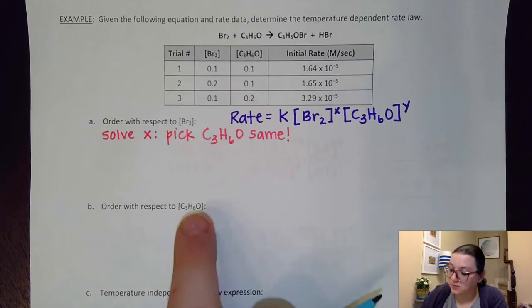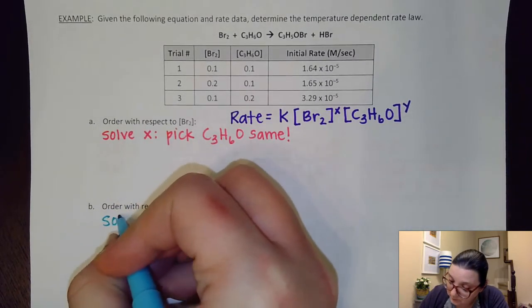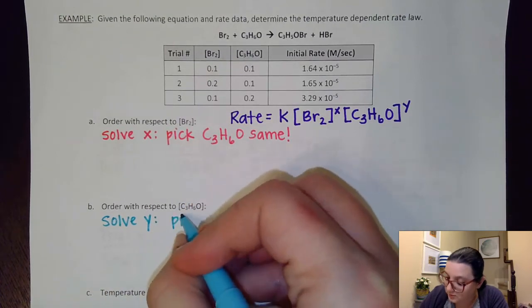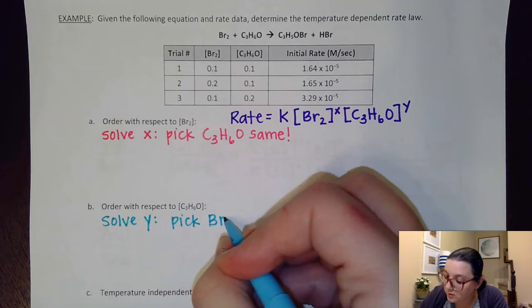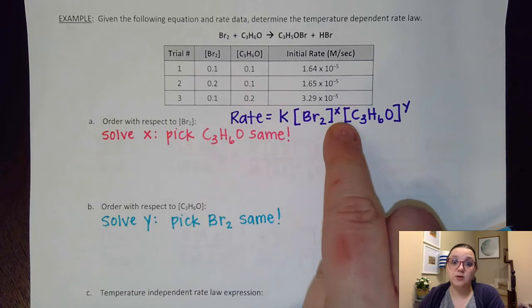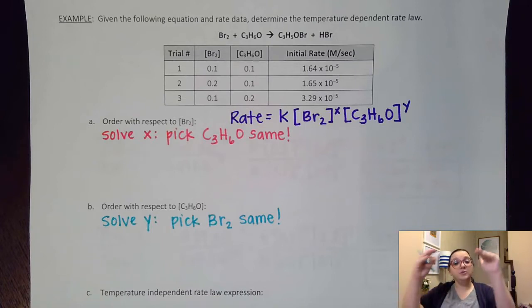For the order with respect to C3H6O, I would want to solve y. And so to solve y, we would want to pick two trials where Br2 stays the same. And so that way, the x could cancel out and I wouldn't have to worry about that as far as my math is concerned. As a reminder, when you pick your two trials and you set up your ratios, we would always want to put the trial with the bigger numbers on the top and the smaller numbers on the bottom as the numbers end up being a little more easy to see.